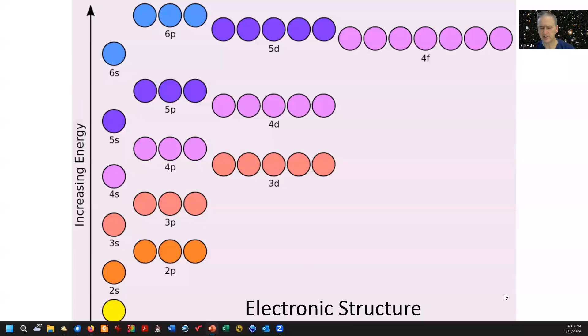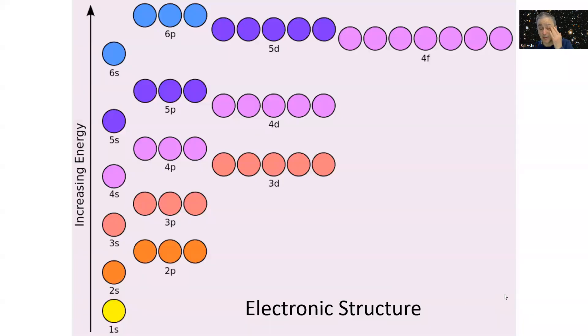Okay, this is Mr. Asher, and this is for Chem 121. I'm going to go through some examples of writing electronic structures for atoms.